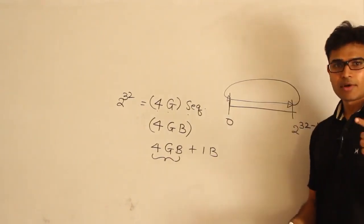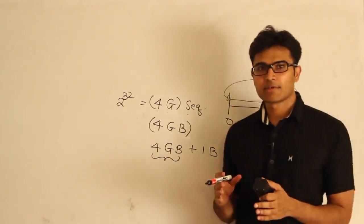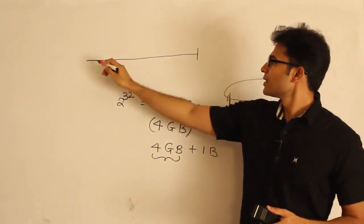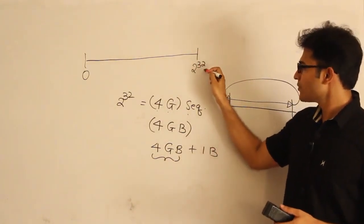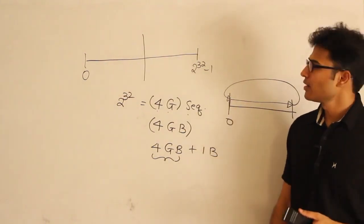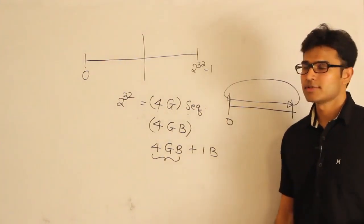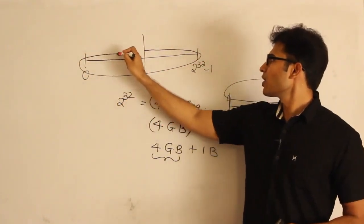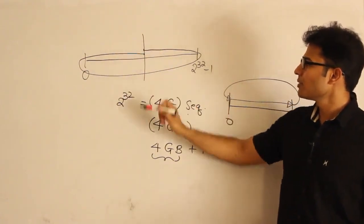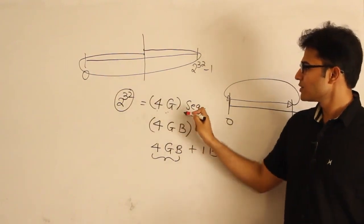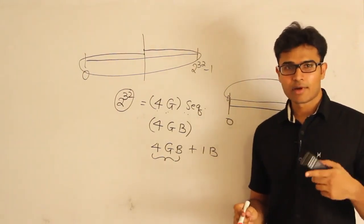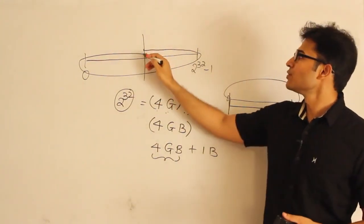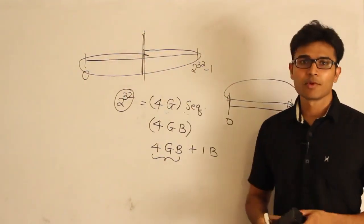Will wrap-around change if I start from a random initial sequence number? The total scale is 0 to 2^32 minus 1. If I start from a random initial sequence number, I go to the end, then wrap back to 0 and come back here. Wherever you start from, you can still use 2^32 sequence numbers — which means you can send 4GB of data uniquely. After that, if you have to send one more byte, you must reuse a sequence number.